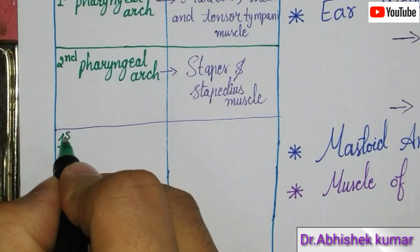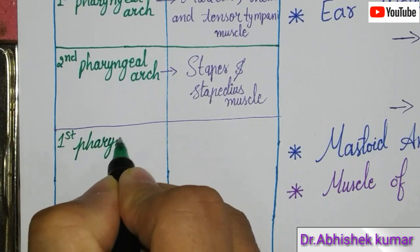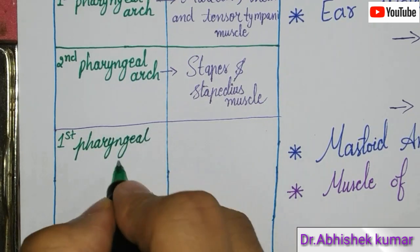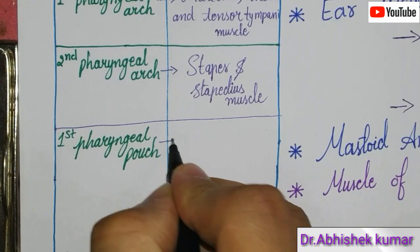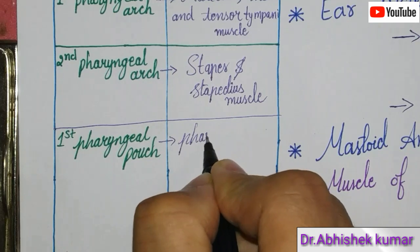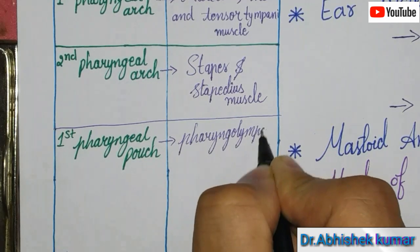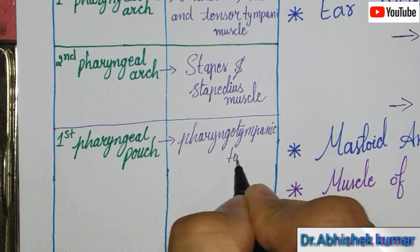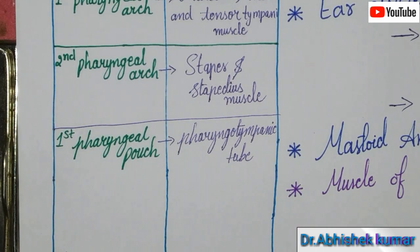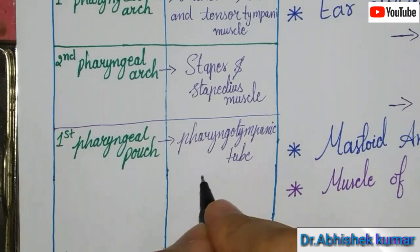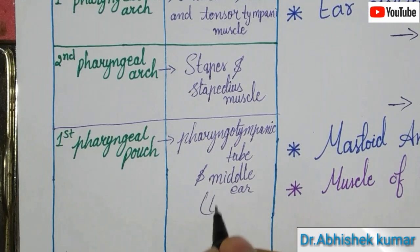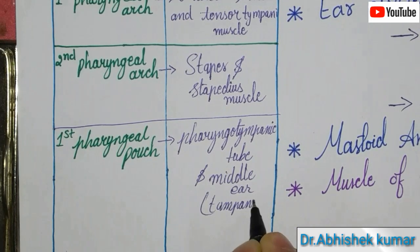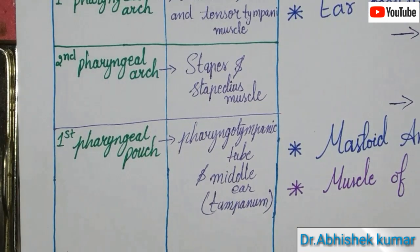The first pharyngeal pouch gives rise to the pharyngotympanic tube and the middle ear. The middle ear is also called the tympanum. So both the middle ear (tympanum) and the pharyngotympanic tube are mainly developed from the first pharyngeal pouch.